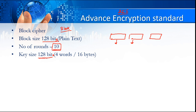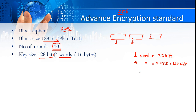In AES, these keys are represented with a term called a word. One word is equal to 32 bits. So four words will be equal to 4 multiplied by 32, that is 128 bits. Or we can also call it 16 bytes, because each byte is 8 bits — 16 multiplied by 8 is also 128. In an exam, they may ask the key size of AES and give options of 128 bits, four words, or 16 bytes — they are all the right answer because they have the same value.